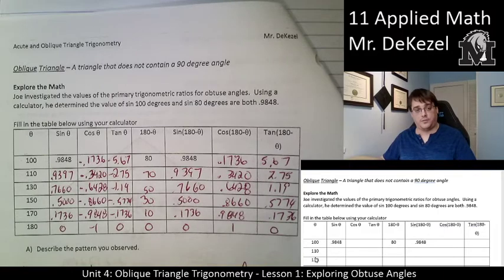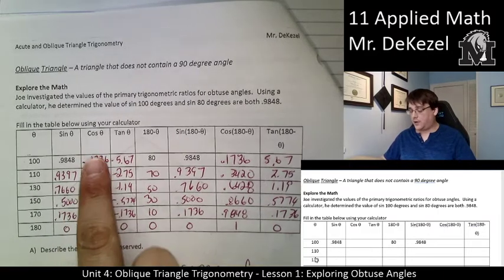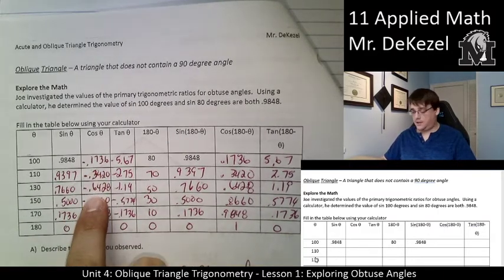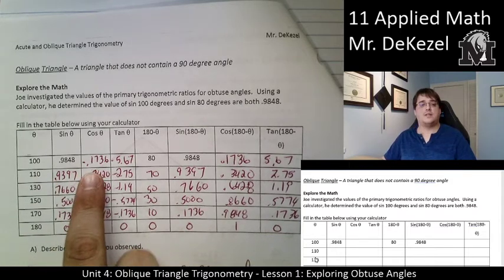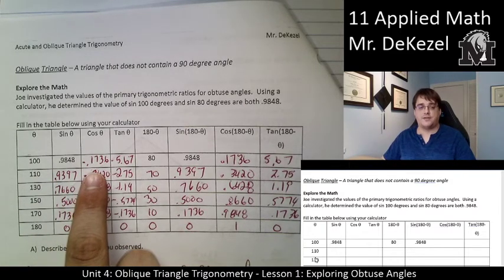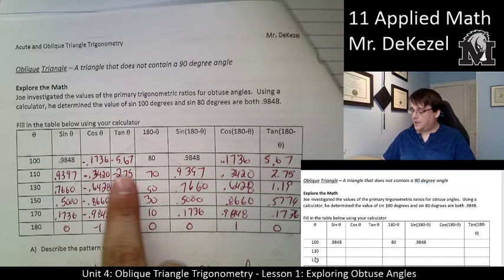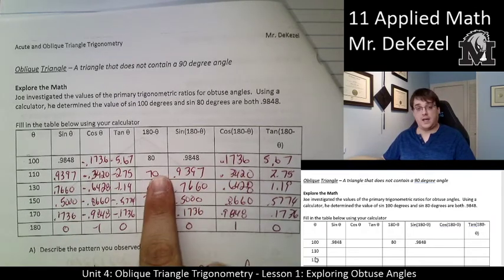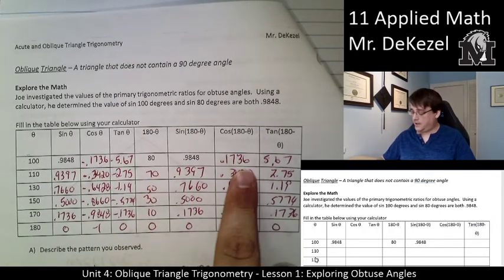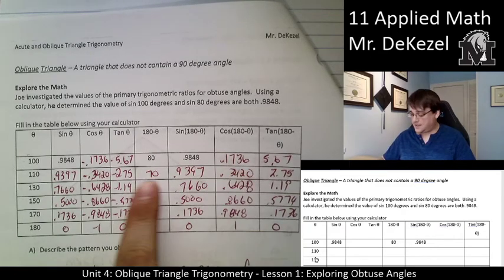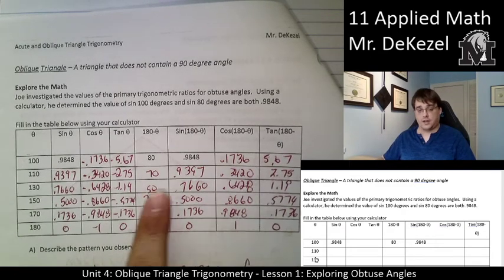You can see that there is a pattern with cosine as well. You've got the cosine of theta. The cosine of 100 was negative 0.1736. And the cosine of 80, or its complement, is the positive version of that. It is the same for tan.